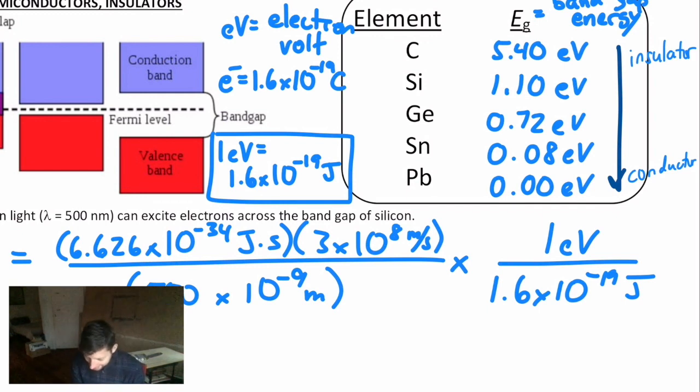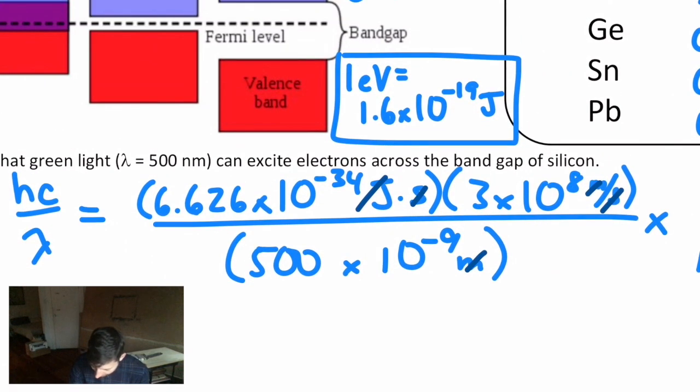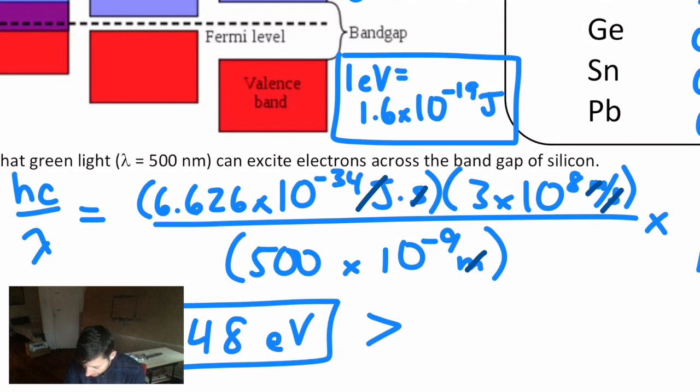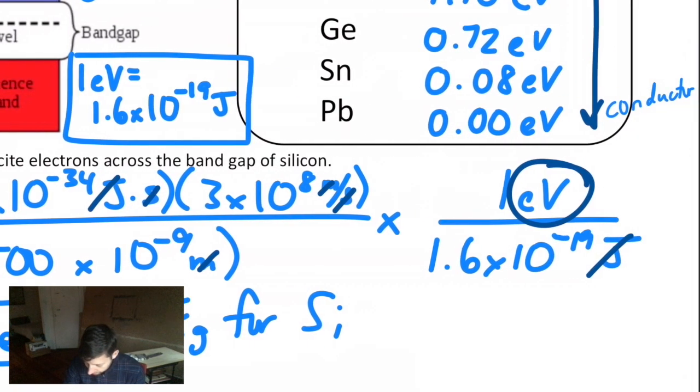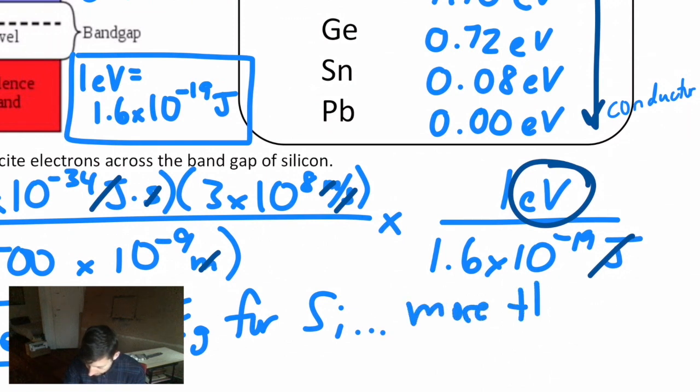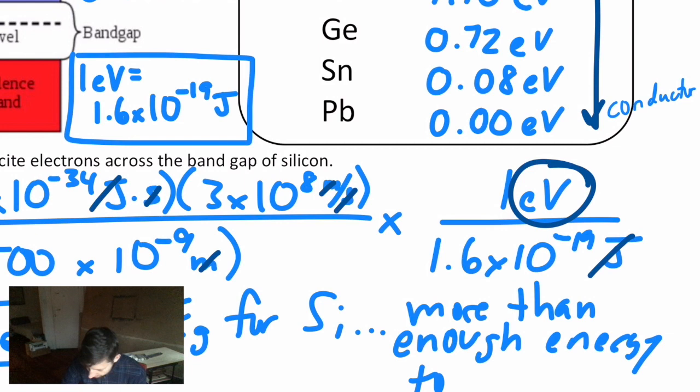You might have a Planck's constant that's already in eVs. That certainly makes this easier if that's the case. Look at your units. Do some dimensional analysis. Meters cancel with meters. Seconds cancel with per seconds. Even joules cancel with per joules. You are in eVs. When you plug in all this math, you get 2.48 electron volts. And that is larger than the band gap energy for silicon. So we could say more than enough energy, more than enough energy to conduct.